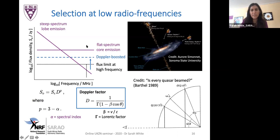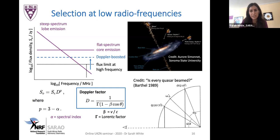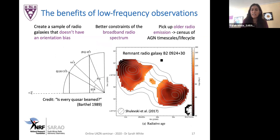It was Barthel who used a low-frequency source sample, the famous 3CRR sample, to test the unification idea that radio galaxies and radio-loud quasars are in fact the same type of object oriented differently with respect to our line of sight. In addition to creating a complete sample without orientation bias, low-frequency observations also give much better constraints of the radio spectrum. Since radio emission moves to lower energies as it ages, we can pick up a much older population of sources, better appreciating the timescales involved in AGN activity and its interaction with the surrounding environment.